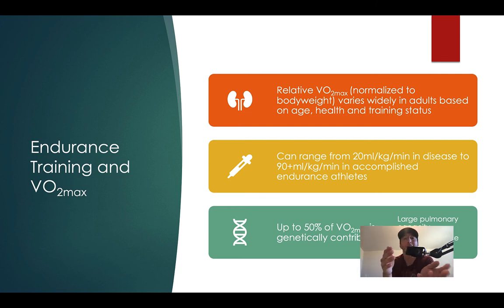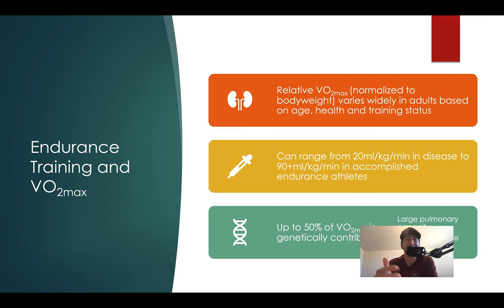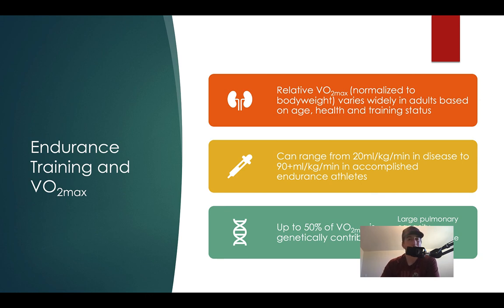Elite cyclists, rowers, and runners are going to have VO2 maxes that are through the roof. What's almost a little bit depressing is that up to 50% of your VO2 max is actually going to be genetically contributed. That means whatever improvements you make are going to be 50% determined by your genetics. So if you're not built to be a runner, you're probably not going to be a very great runner. It doesn't mean you can't be fit or perform — but genetics is a big contributor.